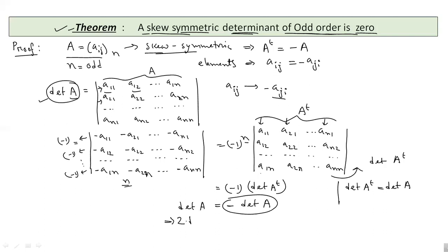So, we have 2 times determinant of A is equal to 0. Which implies that determinant of A is 0.